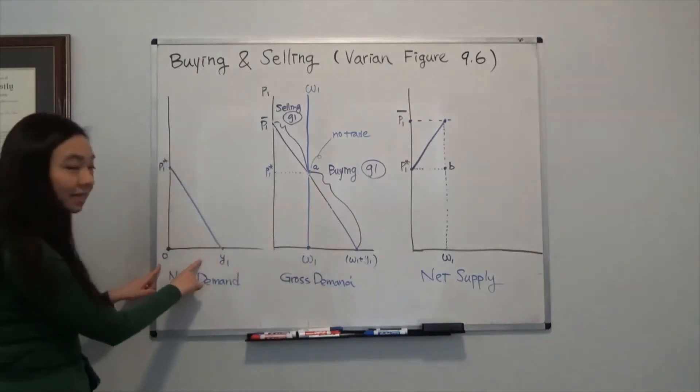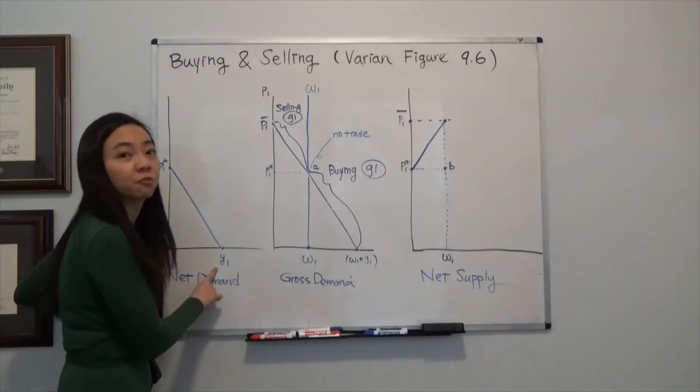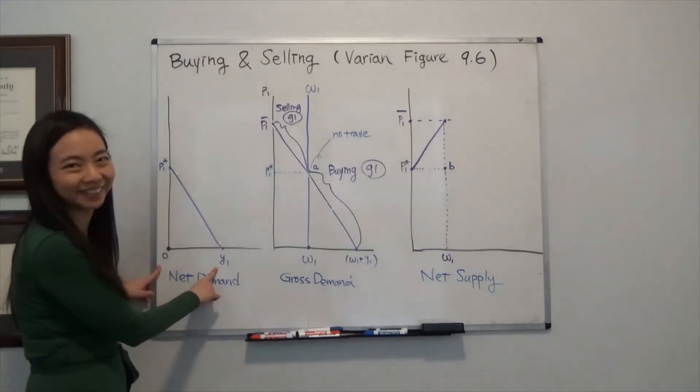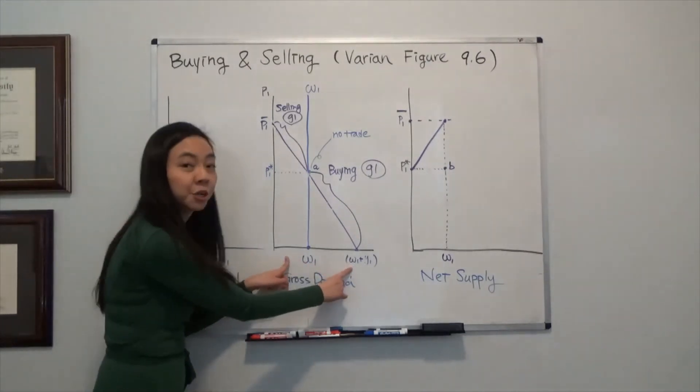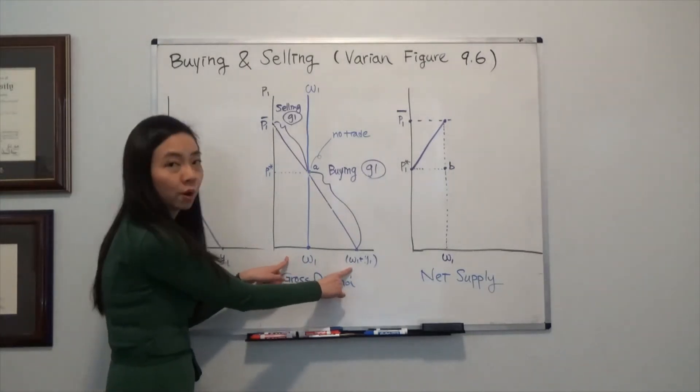And this is my net demand. It shows how many more units of Good 1 that I purchased in the market. Whereas gross demand shows me how much Good 1 that I consumed.